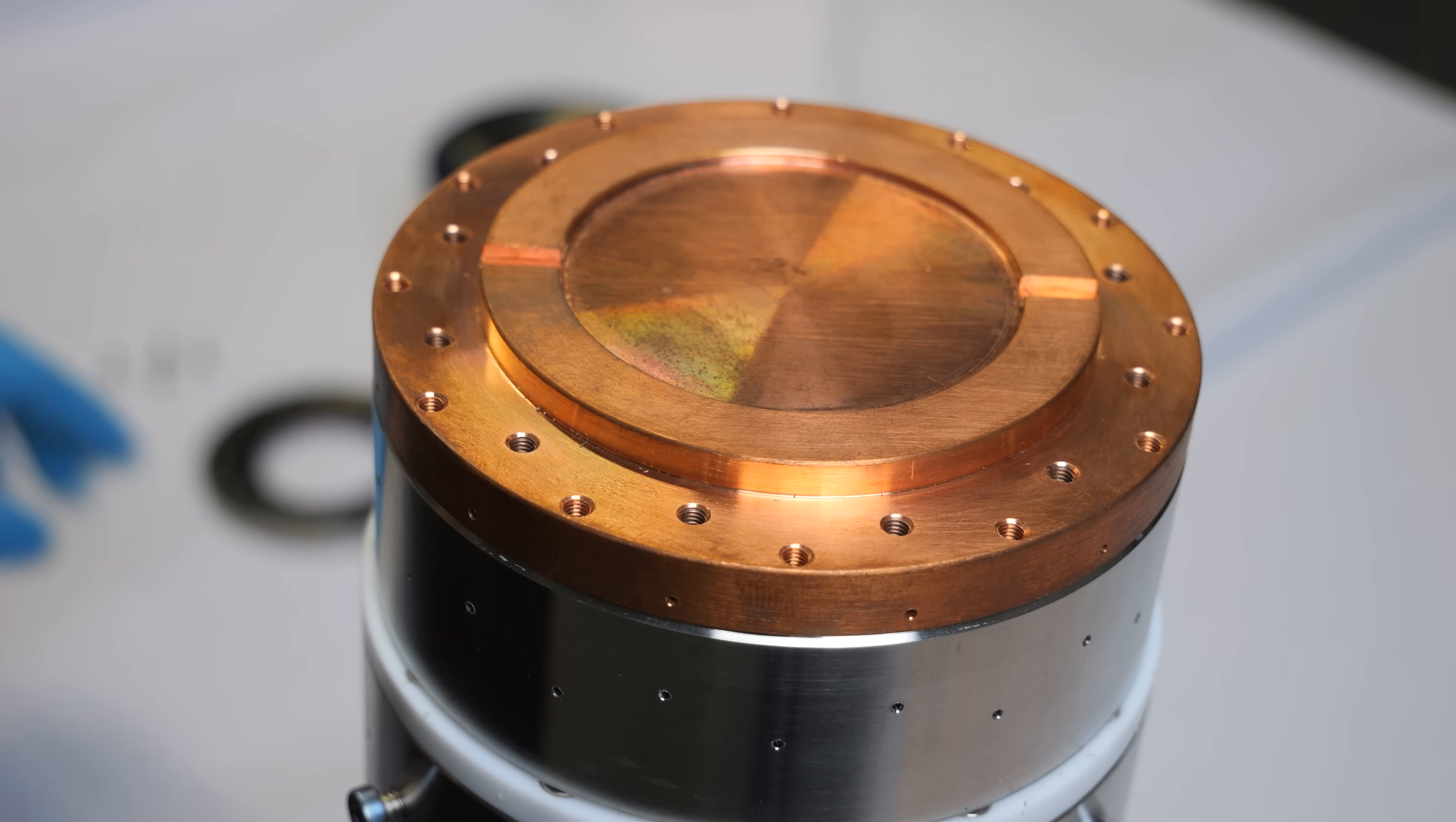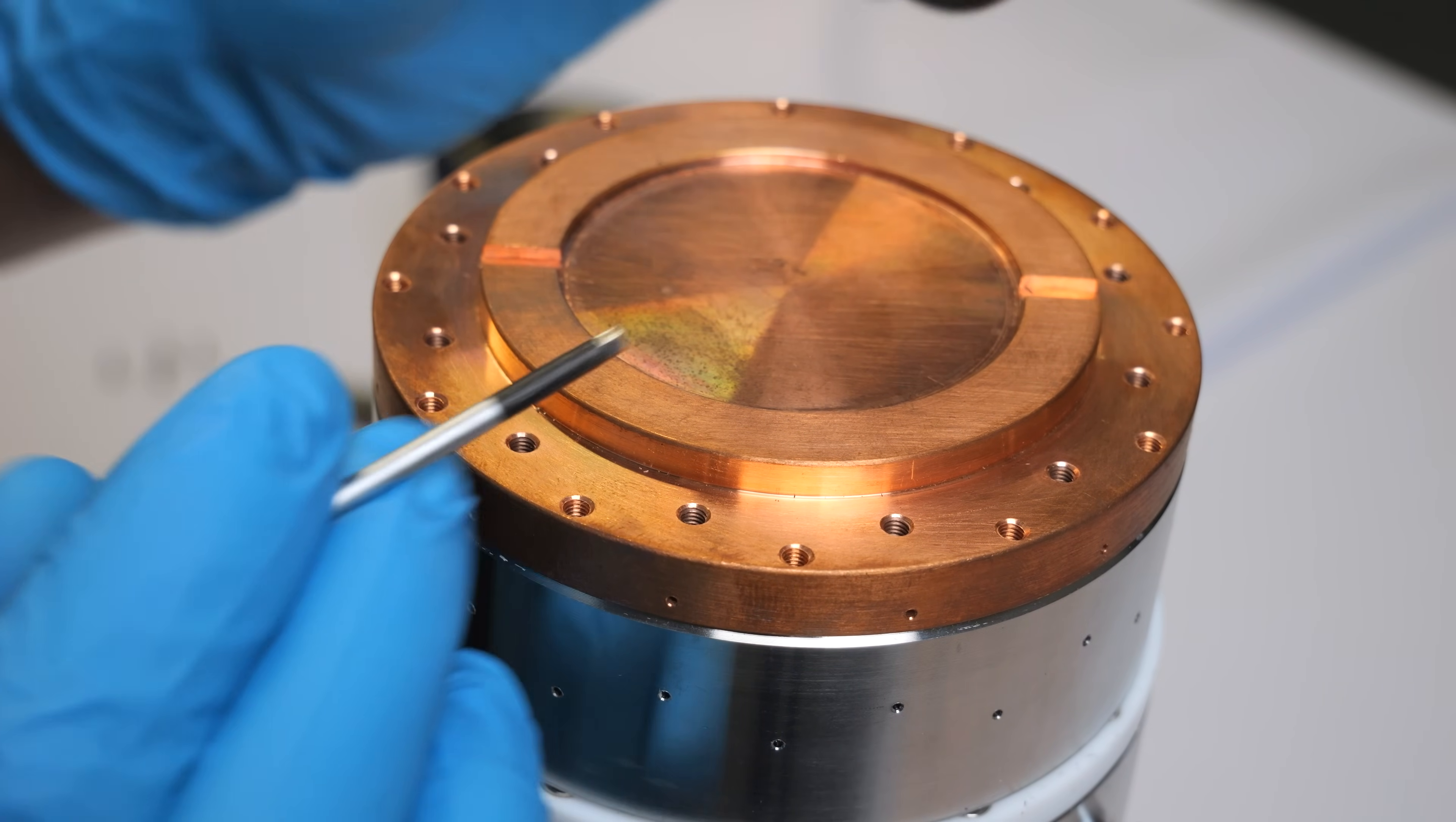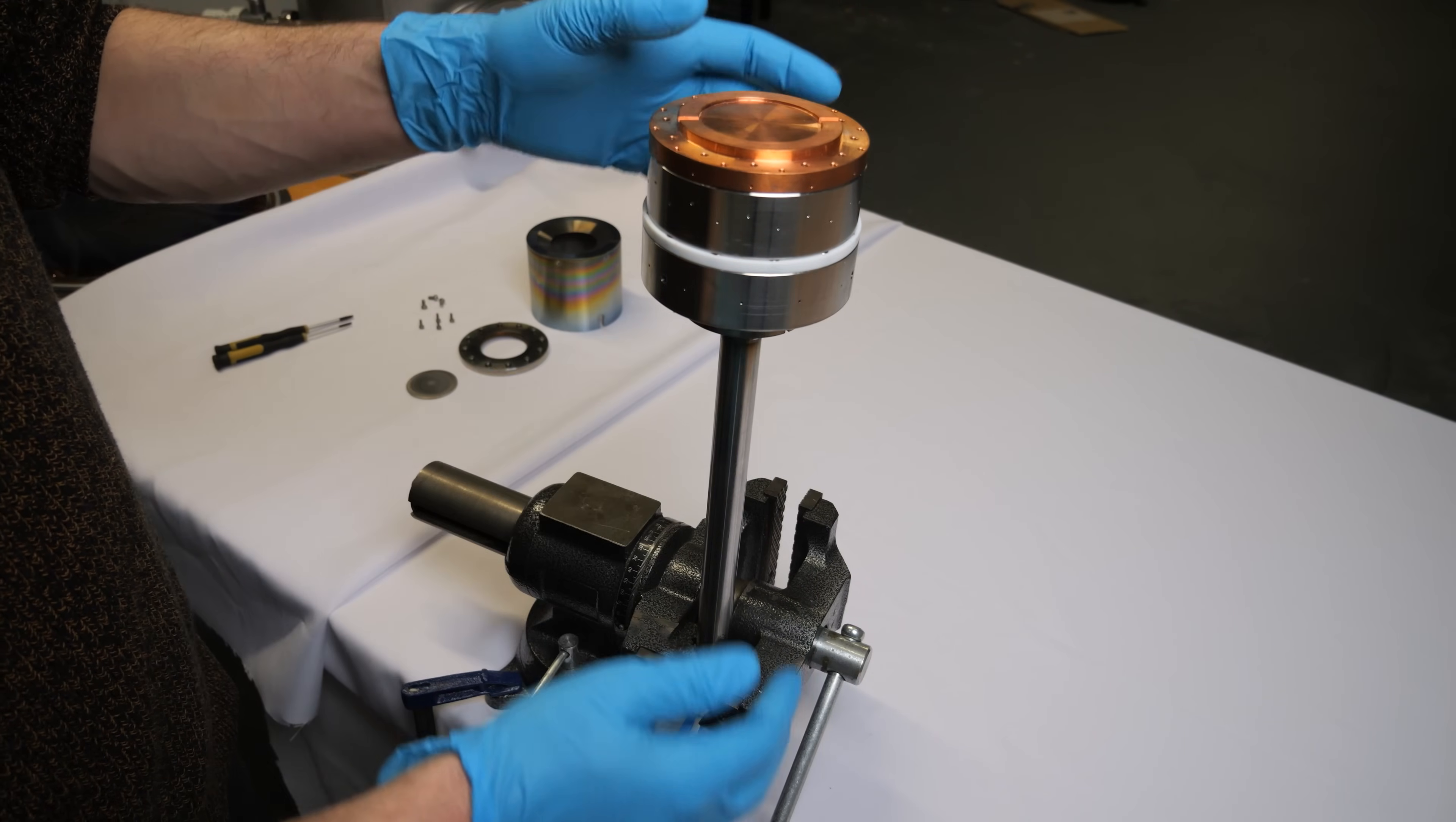This magnetron is designed for two inch targets but it can be used for targets which are a little bit larger. I just increased the diameter of this recess here a little bit so I could use targets which aren't exactly two inches in diameter. To be able to disassemble this magnetron further I will have to turn it around.